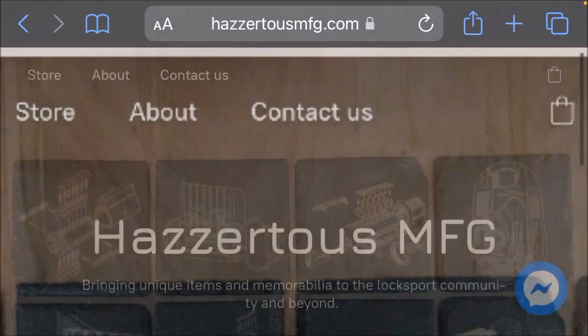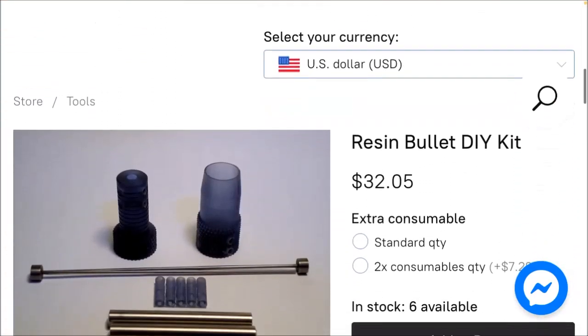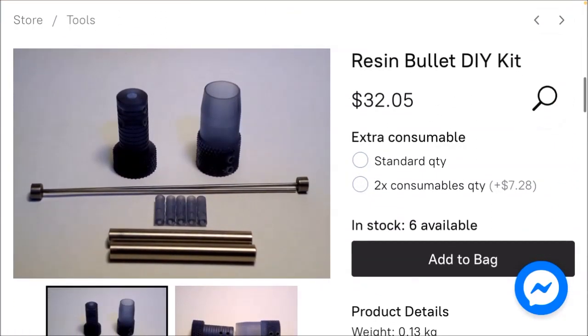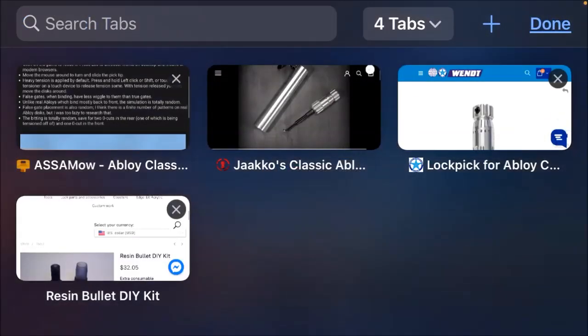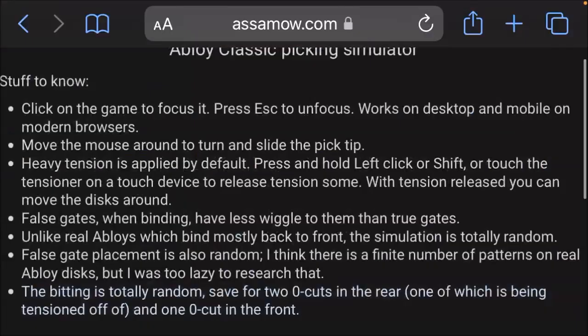If you're poor, you can make your own Abloy pick. There's these resin bullet DIY kits you can get, these are pretty cheap. There's a few tutorials on how to make your own Abloy picks. I'll put all these links in the description if you're interested in these.